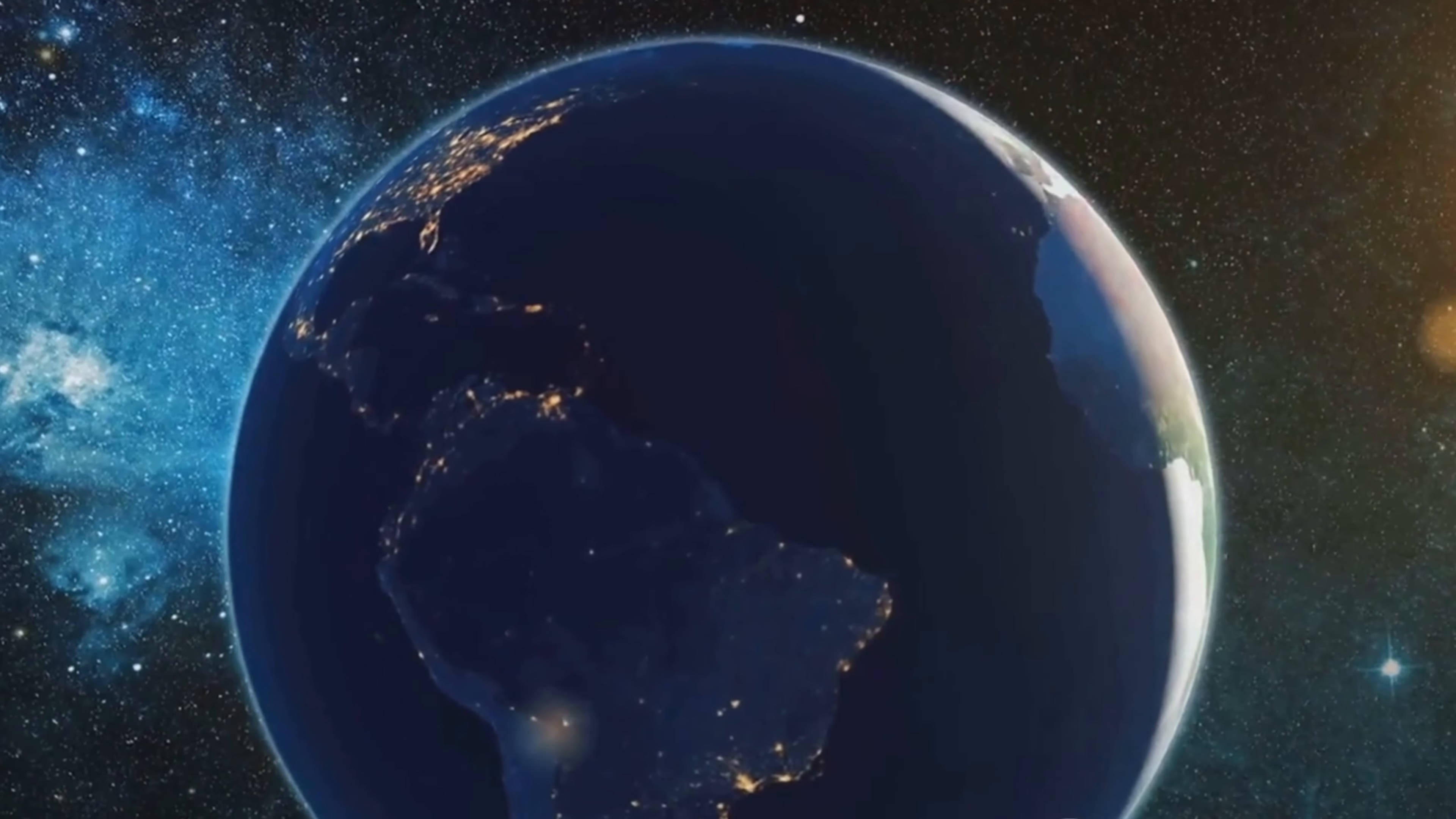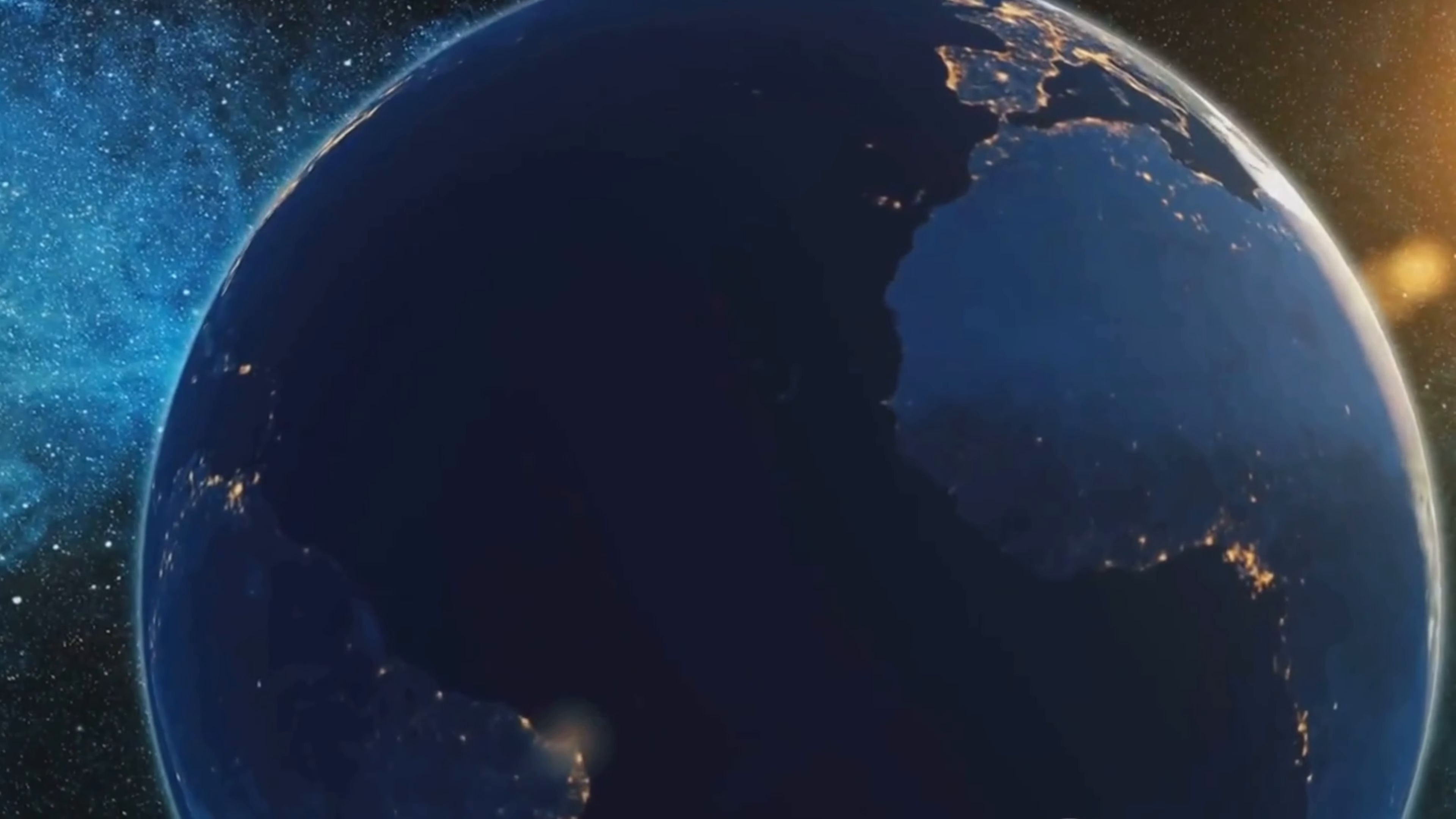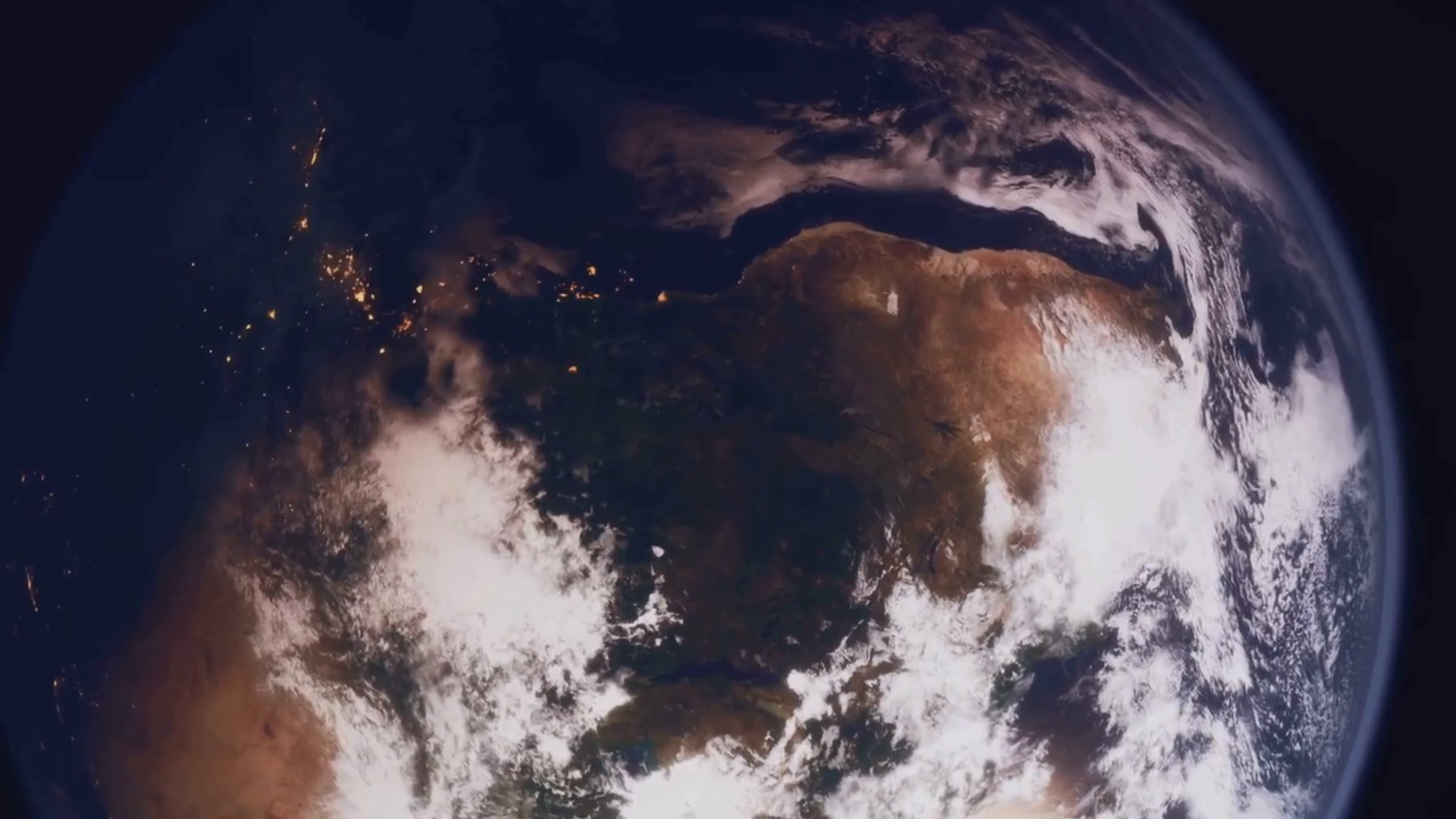And what about a flat Earth? The gravity would be strongest at the center and gradually decrease towards the edges. This would result in a drastic variation in climates, with the center being extremely hot due to the concentrated gravity and the edges freezing due to the lack of it. Life would have to adapt to these extreme conditions, leading to a wide range of unique species and ecosystems.